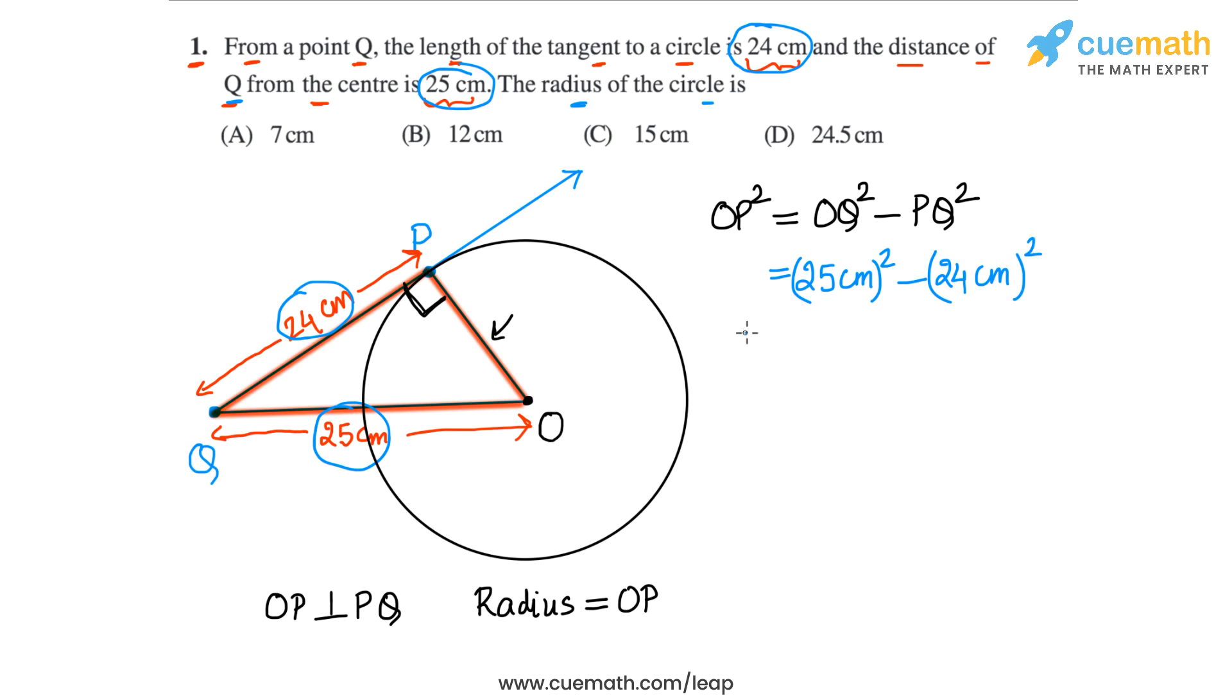So OQ is 25, so 25 centimeters square minus PQ is 24 centimeters, so minus 24 centimeters square. This is what we get: 25 square is 625 and 24 square is 576.